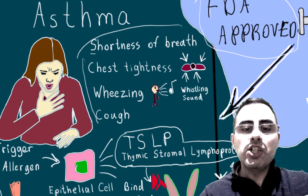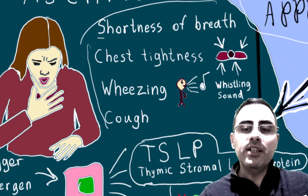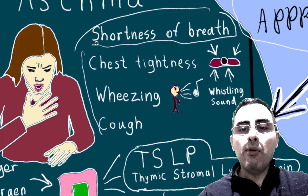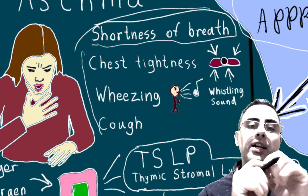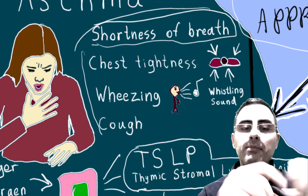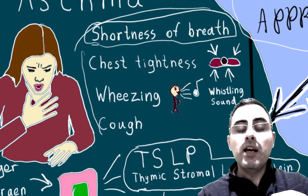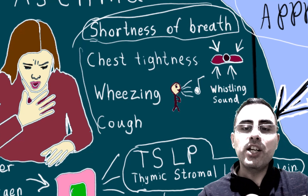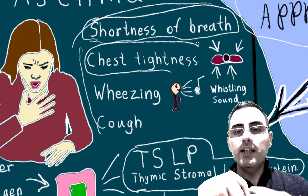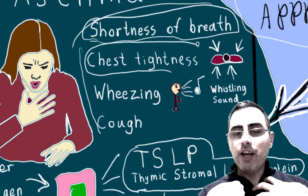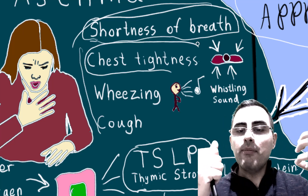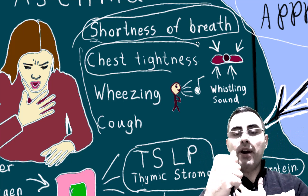The most common symptoms of asthma are shortness of breath, chest tightness, wheezing, and cough. Shortness of breath is any kind of discomfort during breathing. Chest tightness means pressure or sensitivity around the chest — people describe it as something heavy pressing on their chest.